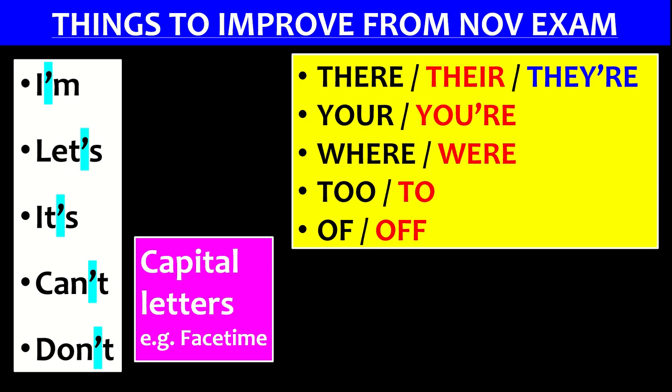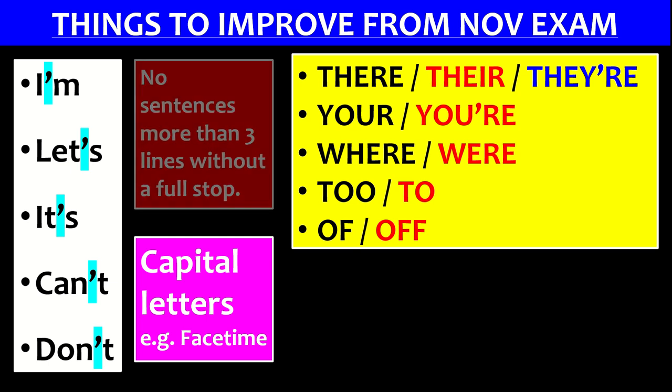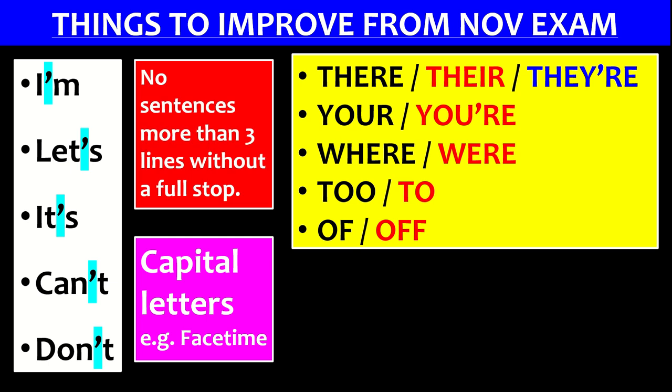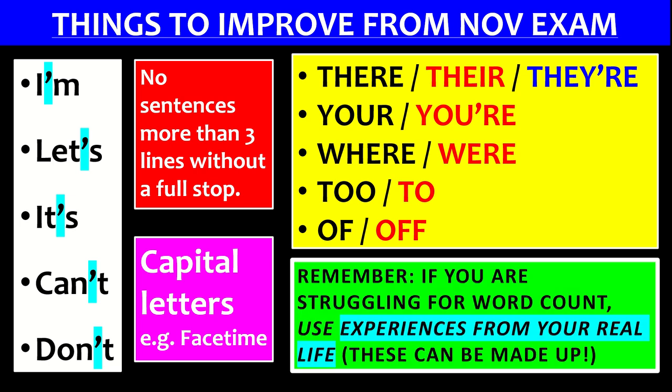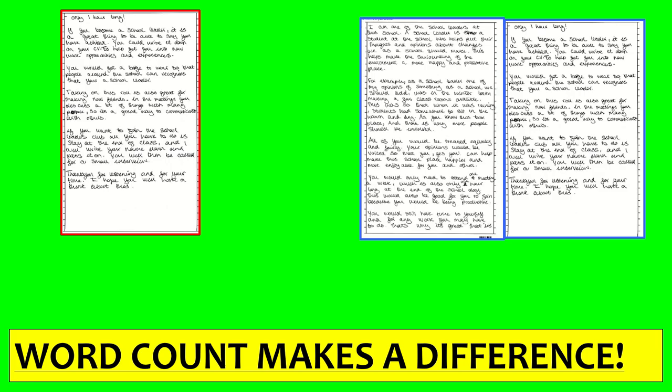Check capital letters — I've noticed a lot of issues with brands, names, countries, and months not having capitals. No sentence should be more than three lines without a full stop — that's a run-on sentence, which I'll talk about in a minute. And if you're struggling for word count, use anecdotal writing: use experiences from real life, or make them up. If you've been to a festival, talk about it; if not, you could make up that you went to one last year and really enjoyed it.